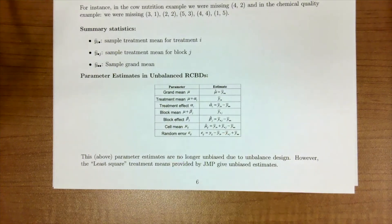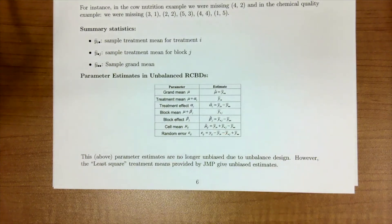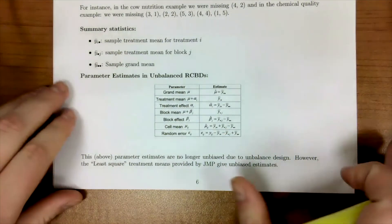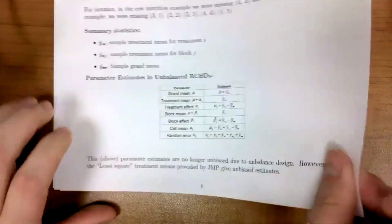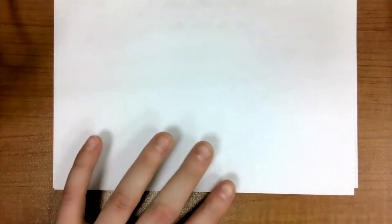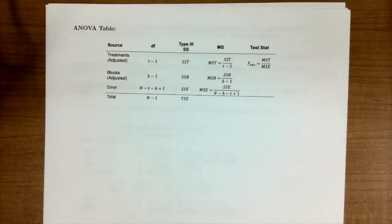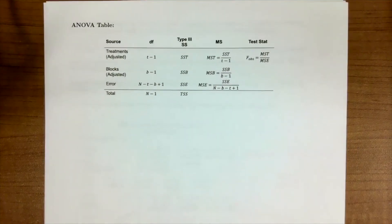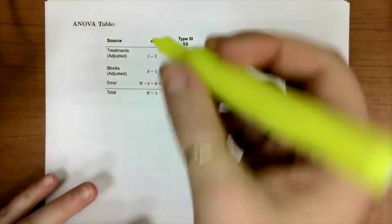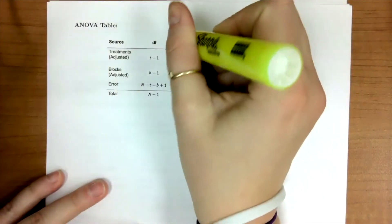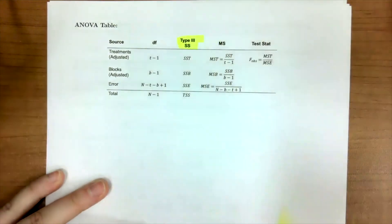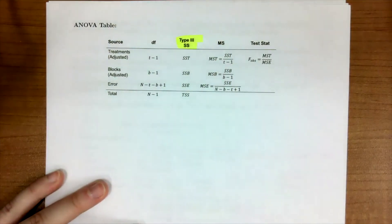For our unbalanced RCBD, summary statistics include the treatment mean, block mean, and grand mean, along with parameter estimates. Note that in a balanced RCBD the parameters are unbiased, but in an unbalanced RCBD they are no longer unbiased due to the imbalance. However, we can use the least square treatment means provided by JMP — or R — to obtain unbiased estimates. In the ANOVA table, we again use the type three sums of squares.